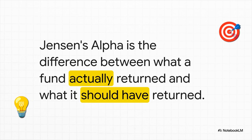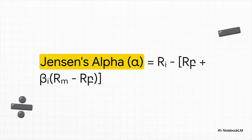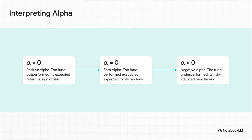Jensen's Alpha is the name of our tool. What it does is measure the gap — the difference between what a fund actually returned and what the CAPM formula said it should have returned. It's the performance that you just can't explain away by saying the market went up. This formula strips away all the noise from the broader market's ups and downs and isolates the fund manager's real contribution — whether the manager actually added any value. If you get a positive alpha, it means the manager generated extra returns above and beyond what was expected for the risk. That's a sign of real skill. But if you get a negative alpha, that means they took on risk and didn't even get the return they should have.